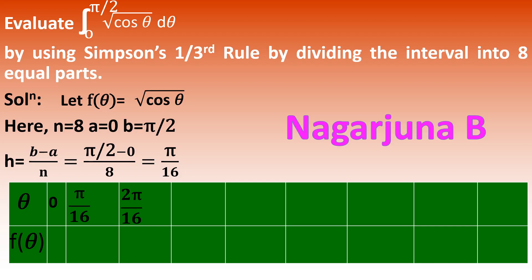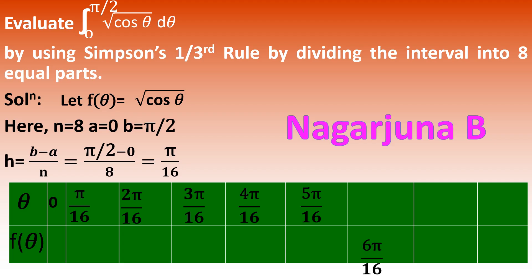You can simplify or leave it as is — you will get the same answer. Continuing: 2π/16 + π/16 = 3π/16; then 4π/16; 5π/16; 6π/16; 7π/16; and finally 8π/16 = π/2. That last value is the upper limit, confirming we have correctly divided the interval into 8 equal parts.